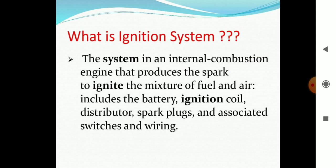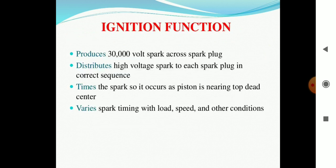These components are collectively called the ignition system. What are the main functions of ignition system? It produces 30,000 volt spark across the spark plug and distributes the high voltage spark to each spark plug in the correct sequence.